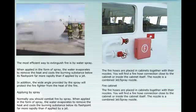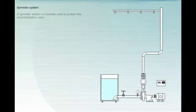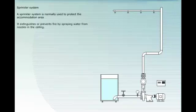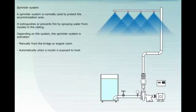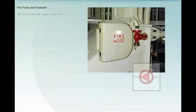A sprinkler system is normally used to protect the accommodation area. It extinguishes or prevents fire by spraying water from nozzles in the ceiling. Depending on the system, the sprinkler system is activated manually from the bridge or engine room, or automatically when a nozzle is exposed to heat. The fire pump will supply water to the fire hoses via the hydrants, the sprinkler system, and the foam system. The fire pump is started from the bridge or the engine room.